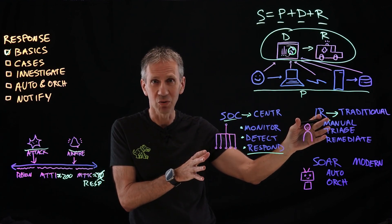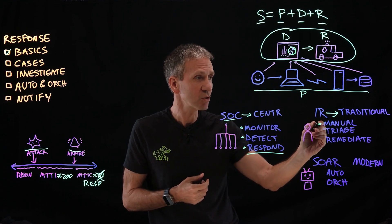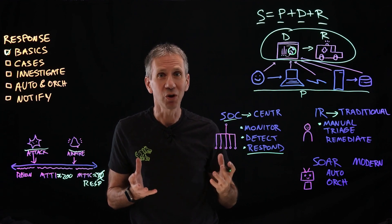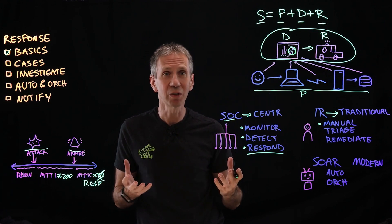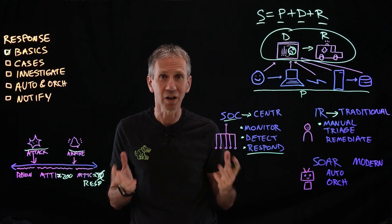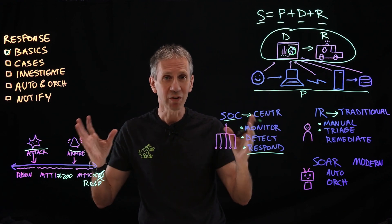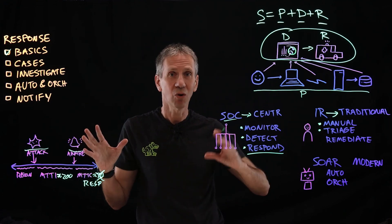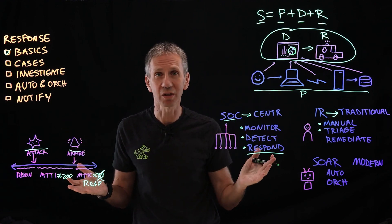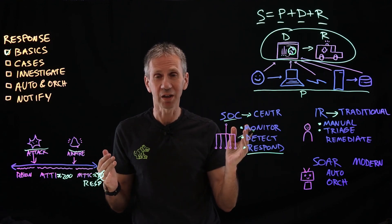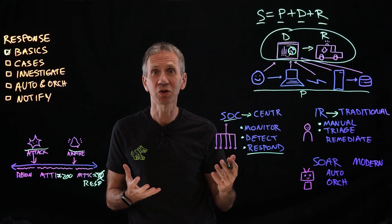Traditionally, incident response has been largely a manual process. It relies on heroes and experts — people who happen to have knowledge in their heads and a gut feel on what to do. That doesn't scale well and isn't necessarily repeatable. Their job is first to triage — when alarms come in, determine whether it's a real attack or just noise, and if it's real, how significant is it, and what's the order of importance? That's the triage aspect, figuring out which patients we need to see first — that word comes from healthcare.